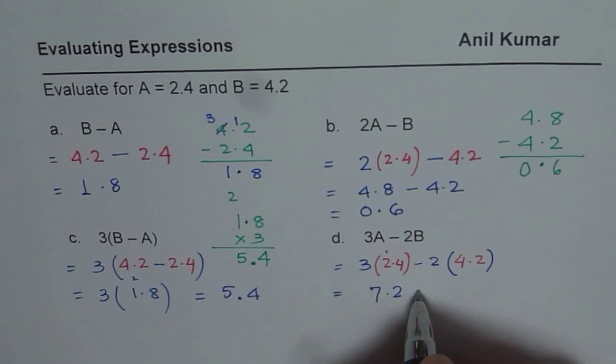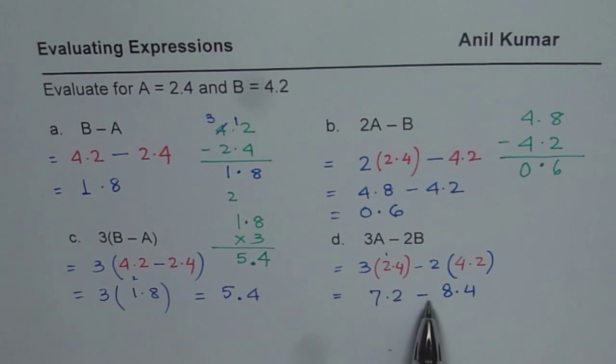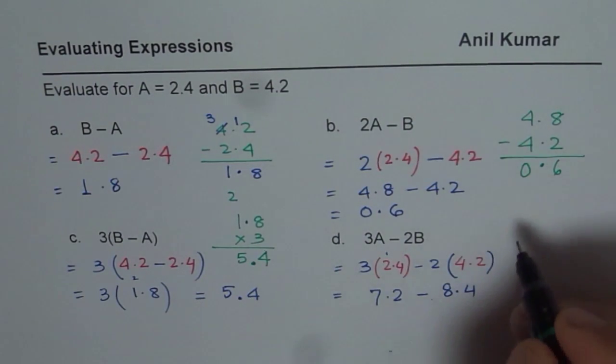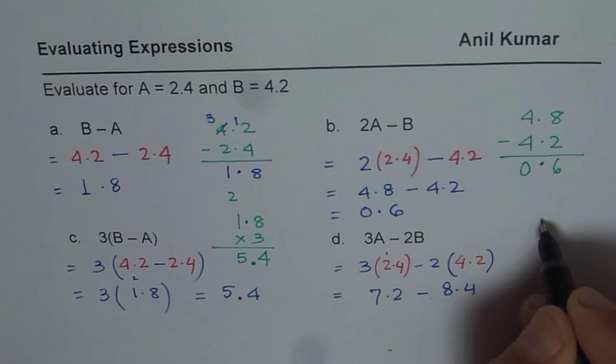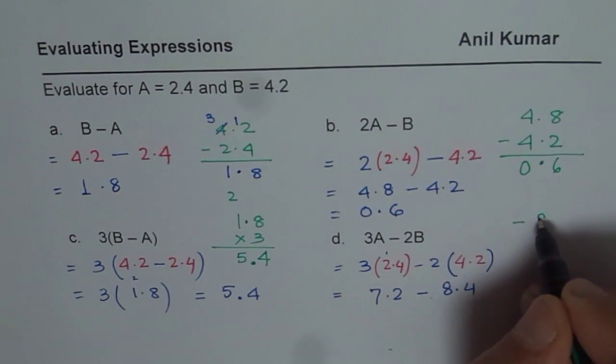So we get 7.2 minus 2 times this is 8.4. So we get 7.2 minus 8.4. So the negative number in this case is higher. So you are expecting to get a negative answer. How do you do this takeaway? So what we will do here is we will write negative number first and then take away from the negative number.